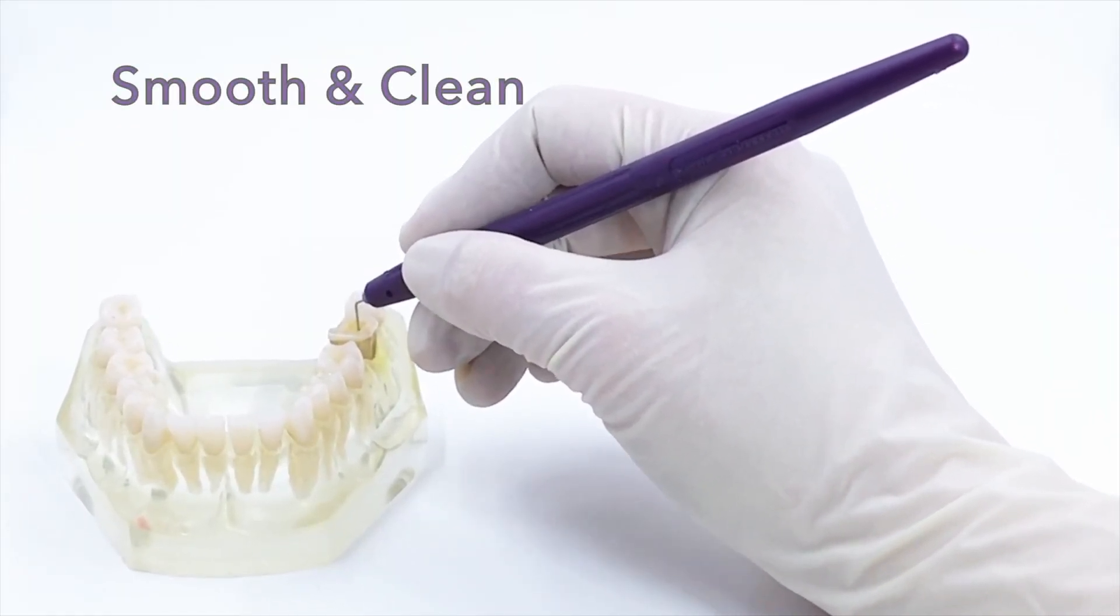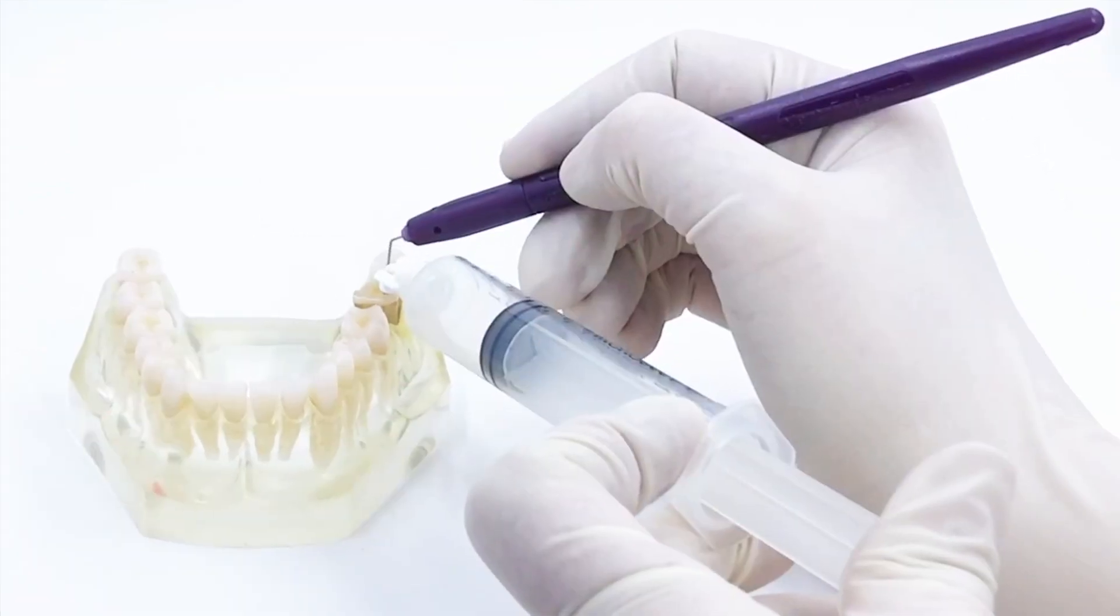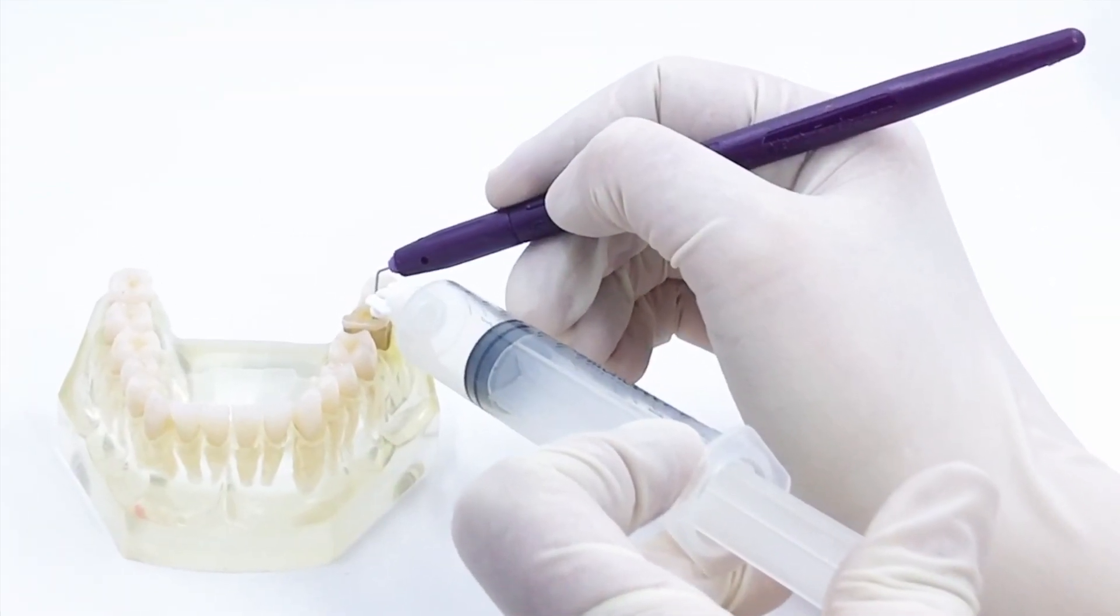You can create a smooth, clean glide path in under two minutes and lets you irrigate while filing.